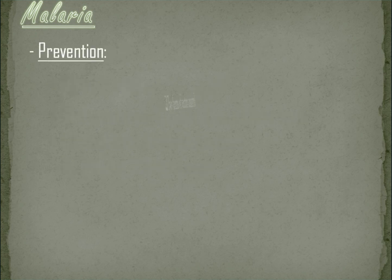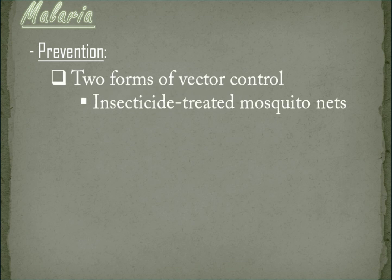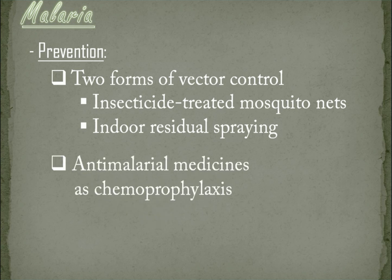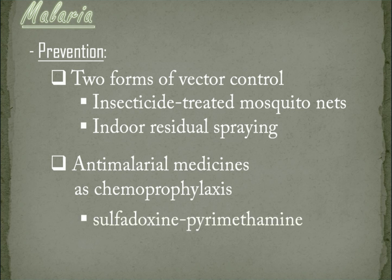Prevention. WHO recommends two forms of vector control: insecticide-treated mosquito nets and indoor residual spraying. Sleeping under an insecticide-treated net reduces contact between mosquitoes and humans by providing both a physical barrier and an insecticidal effect. Indoor residual spraying with insecticides can rapidly lessen malaria transmission; it involves spraying the inside of housing structures with an insecticide, usually once or twice a year. Anti-malarial medicines can also be used as chemoprophylaxis. For pregnant women living in moderate to high transmission areas, WHO recommends at least three doses of intermittent preventive treatment of sulfadoxine-pyrimethamine.